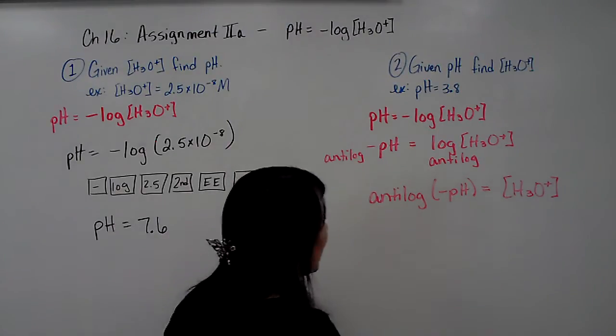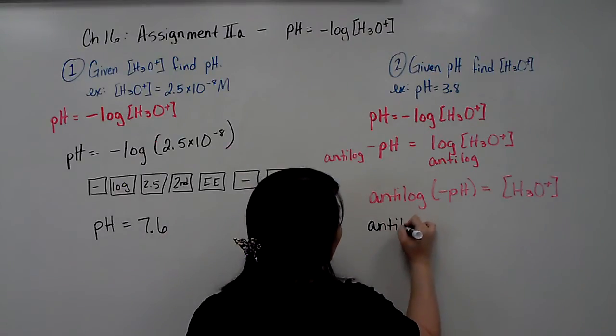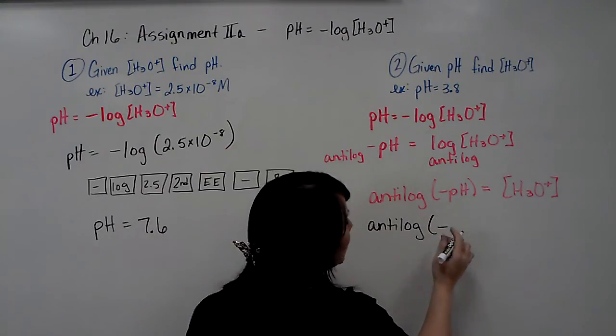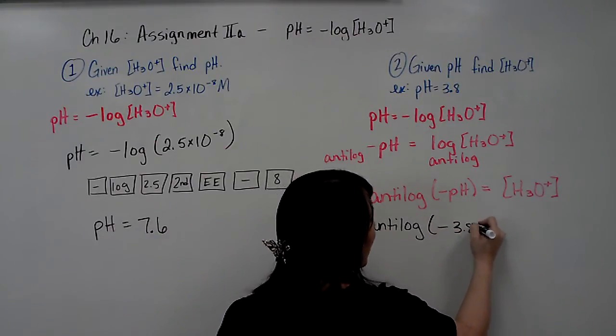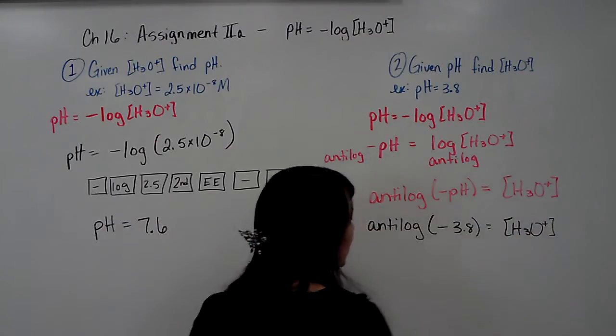So let's go ahead and plug in what we have. Anti-log. And our pH, it's got to be the negative, and our pH is 3.8. So negative 3.8 is going to equal the hydronium concentration.